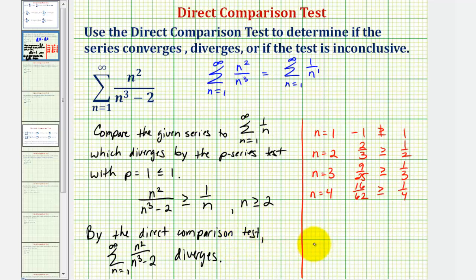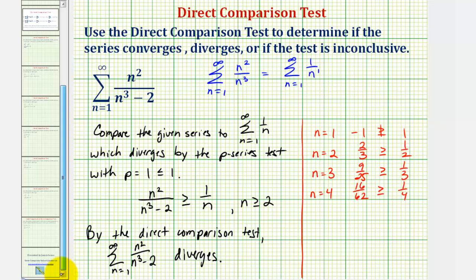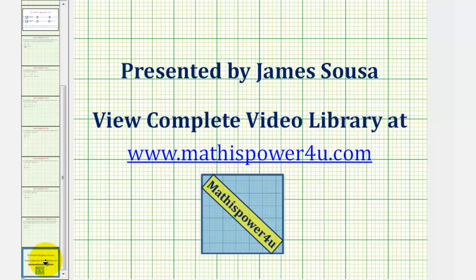We'll take a look at a slight variation of this, where we have plus two in the denominator rather than minus two, in the next example. I hope you found this helpful. Thank you.